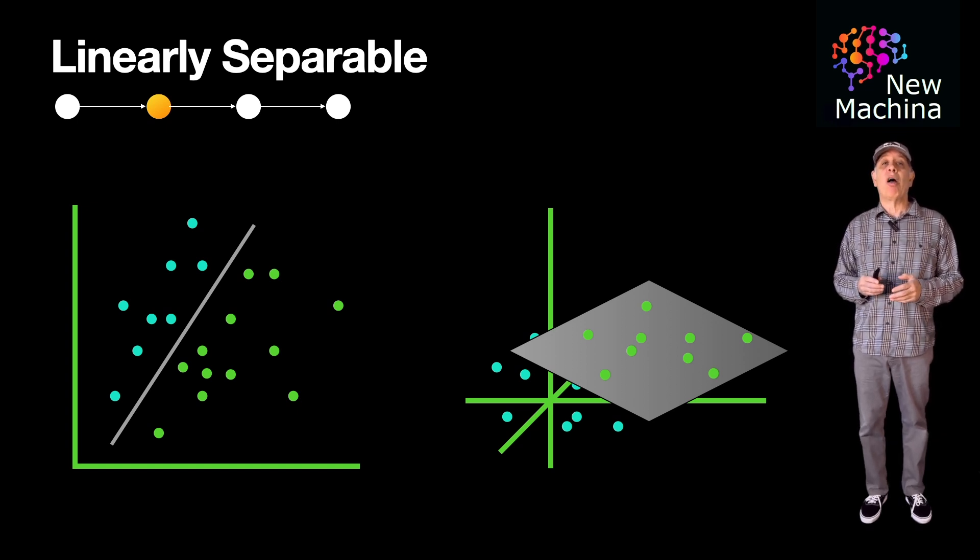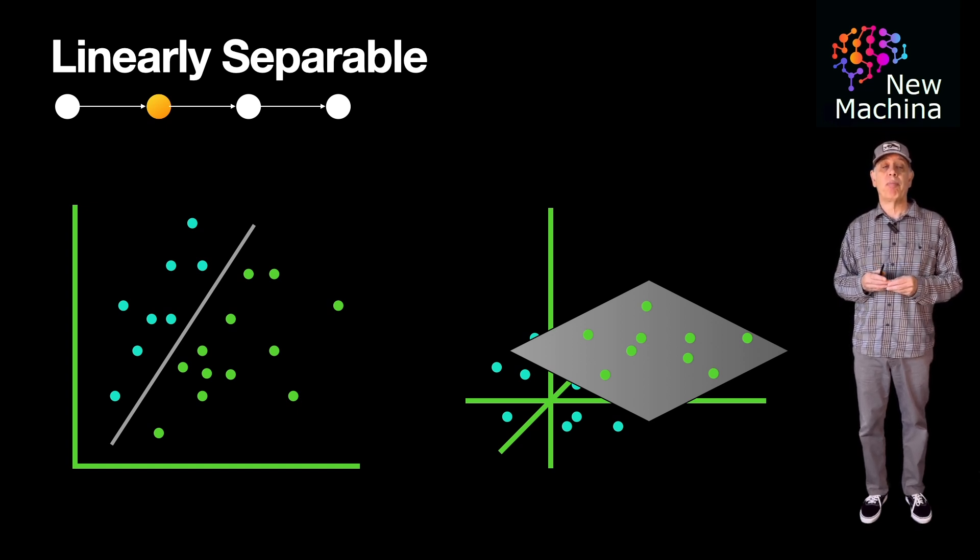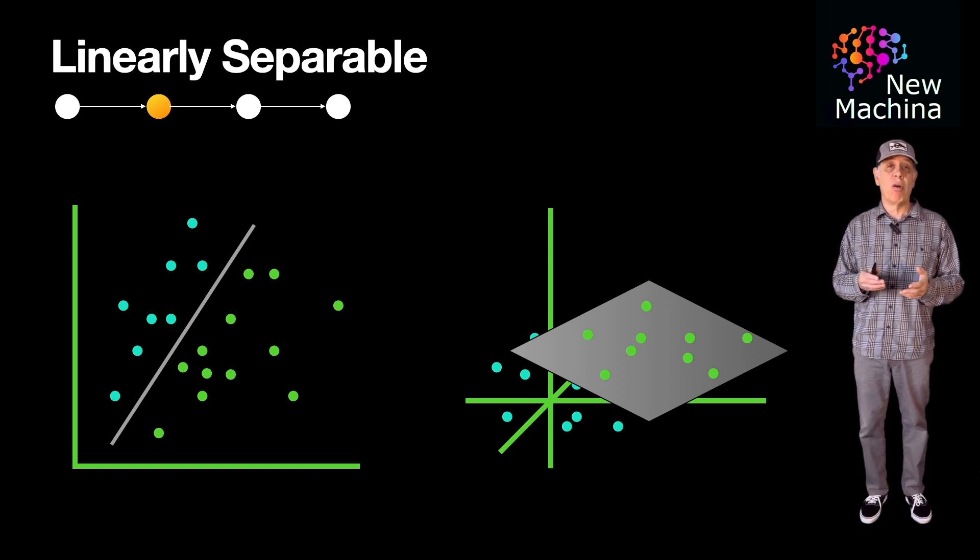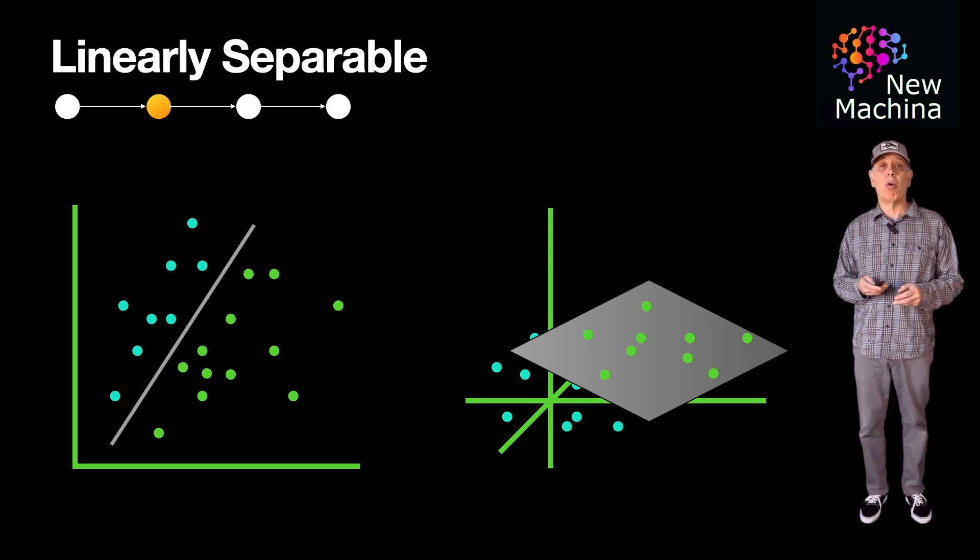What type of learning algorithm did this basic perceptron use? The learning algorithm used in the 1958 perceptron is a simple iterative method based on error correction. It adjusts the perception's weights and bias to minimize the classification errors on the training data. Here's a step-by-step explanation of how the learning algorithm works.